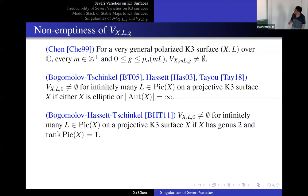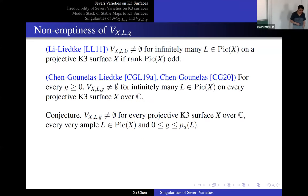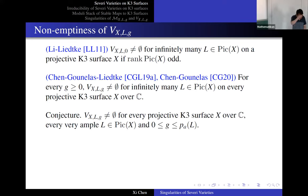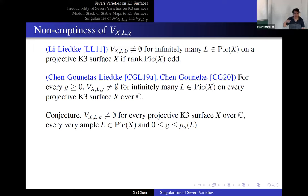The next breakthrough is by Li and Liedtke. They can prove this using the same method but with a lot of refinement, and they can prove it for Picard rank odd. Combining with previous statements, if the Picard rank is bigger than or equal to five, X becomes elliptic, covered by the Bogomolov-Tschinkel result. So combining Li-Liedtke with Bogomolov-Tschinkel, the remaining case is Picard rank two and four. In Picard rank four, there are only two cases which do not have infinite automorphisms or any elliptic fibration. So the remaining case is basically rank two.